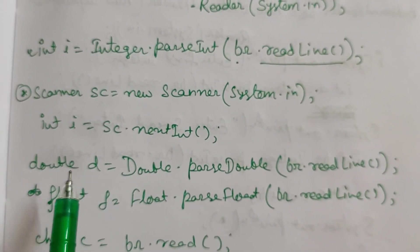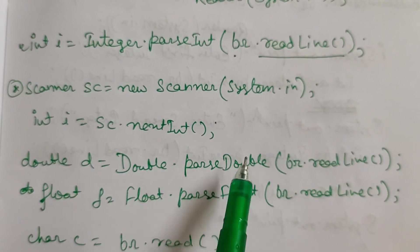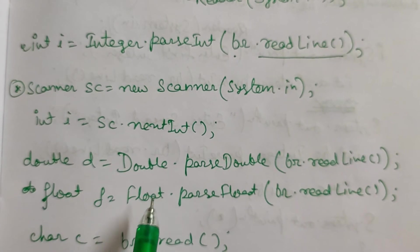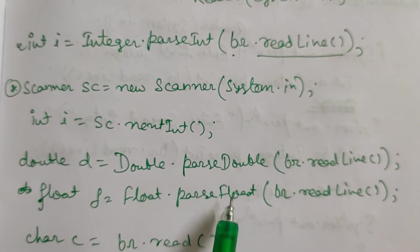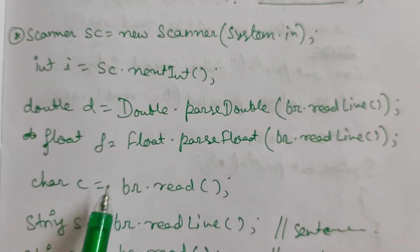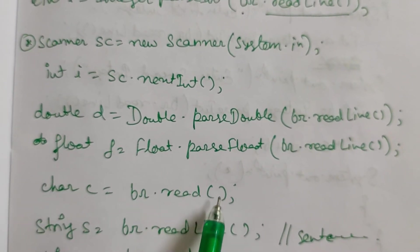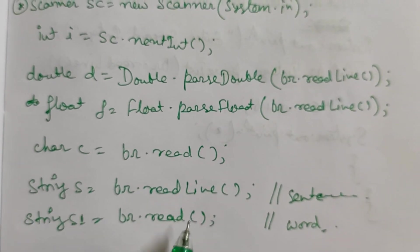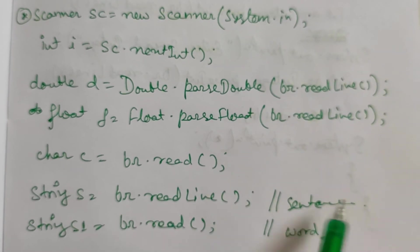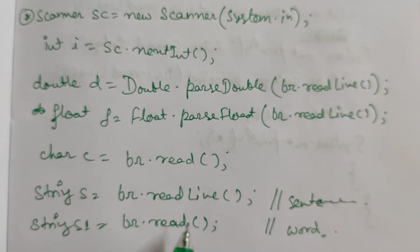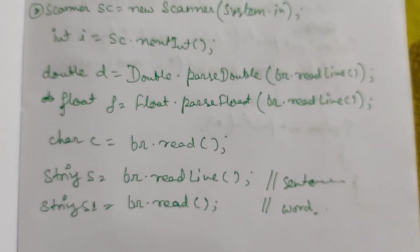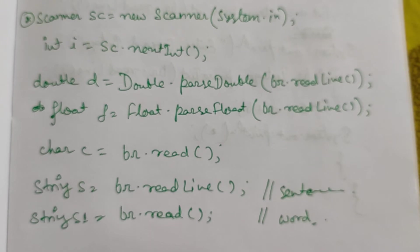Similarly, to take a double value: double d = Double.parseDouble(br.readLine()). For float: float f = Float.parseFloat(br.readLine()). To take a character or string: String c = br.readLine() or br.read(). If you use readLine(), you can take a full sentence with spaces. If you use read() only, you take a single character or word without any space. Let's now see an example program.